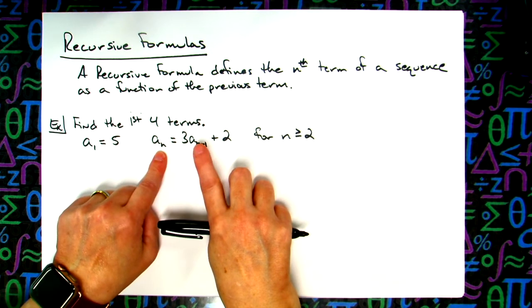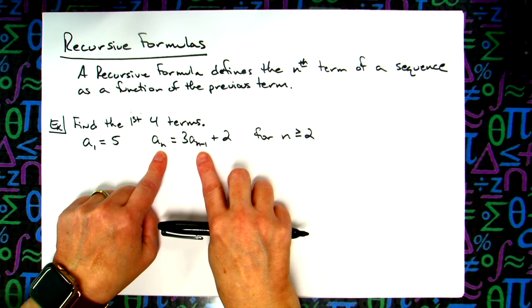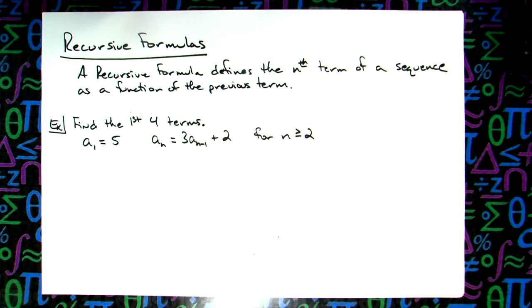So the fact that I'm using subscripts, it's whatever this term is and I'm going to use the answer from the previous term. That's what n and n minus 1 is referring to. Okay, so that's the information they're going to give you. They're probably going to tell you the term it starts with, they're going to give you your recursive formula, and again we're generating the first four terms.